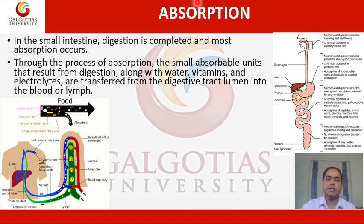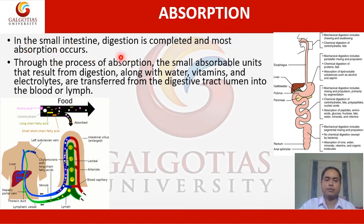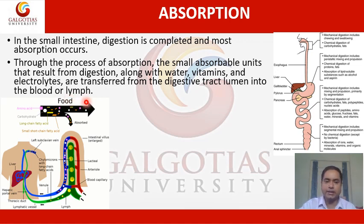The next digestive process is absorption. In the small intestine, digestion is completed and most absorption takes place. Absorption is very important for energy generation and metabolic activity. Through absorption, the absorbable units resulting from digestion — along with water, vitamins, and electrolytes — are transferred from the digestive tract lumen into the blood or lymph.